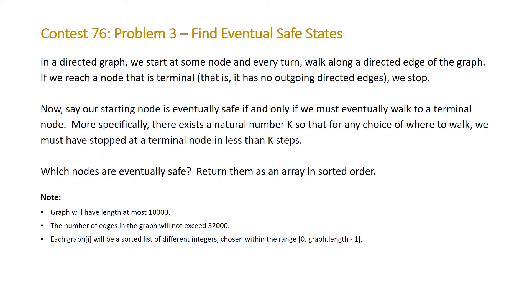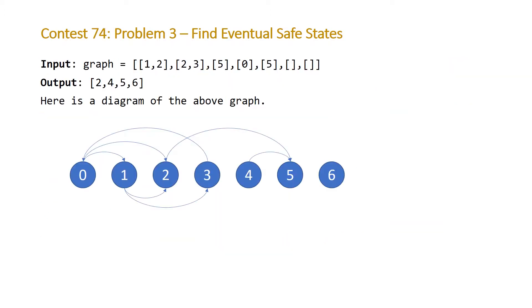Return them as an array in sorted order. Note that the graph will have at most 10,000 nodes and the number of edges won't exceed 32,000. Looking at the example LeetCode provides: each index represents a node and the vector at that index is the nodes reachable from that node. So for node 0, we can get to nodes 1 and 2, and for node 1 we can get to nodes 2 and 3, and so on.